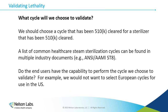The first step is choosing which cycle to validate. We should choose a cycle — and a sterilizer — that has been 510(k) cleared. We can look at industry documents like ANSI/AAMI ST8 or the FDA guidance document if we need help deciding the cycle to validate. We also need to understand whether our end users have the capability to perform the cycle we choose — for example, we would not want to validate selected European cycles for use in the US.